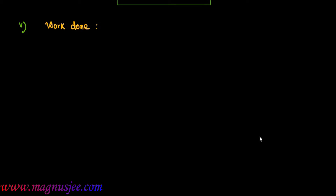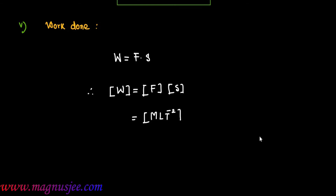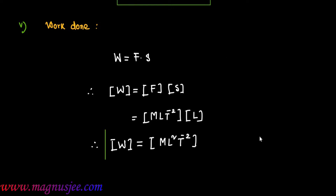Number 5: Work done. Work done W is the product of force and displacement: W equals F dot S, where F is the force and S is the displacement under the action of the force. Therefore, dimension of W equals dimension of F into dimension of S, which equals M L T to the power minus 2 into L. Hence, dimension of W equals M L squared T to the power minus 2.